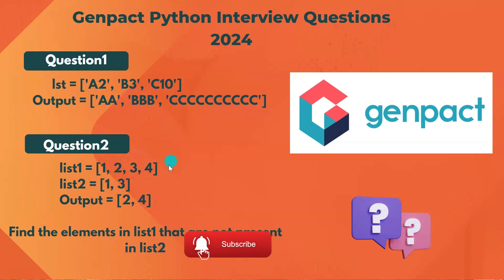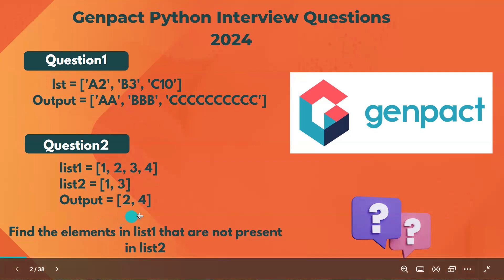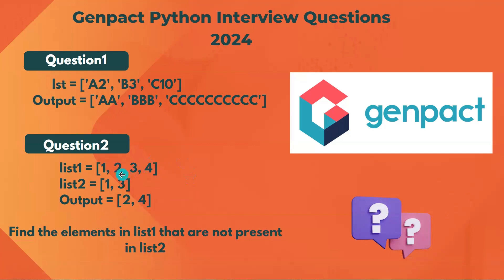For the second question, we are given two lists. List one has 1, 2, 3, 4 and list two has 1 and 3. In the expected output we need to find all elements in list one that are not present in list two. So 2 and 4 are present in list one but not in list two, so we should get those in the output.